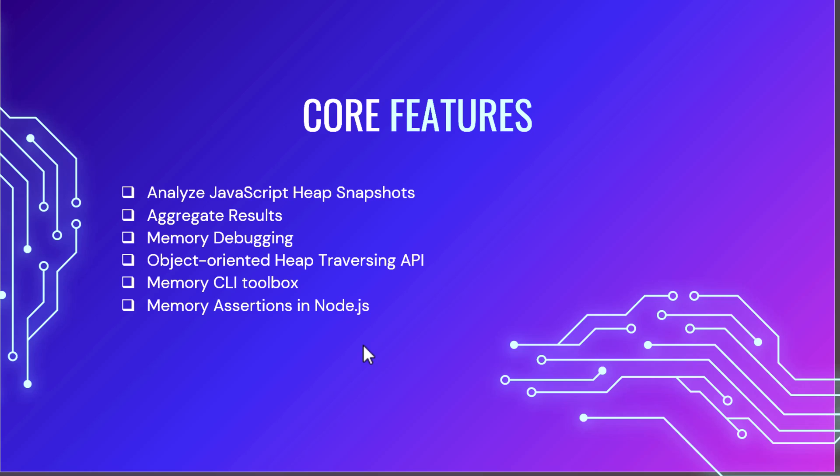Memlab will help you to aggregate your results. You can also debug the memory objects. It has an API where you can easily traverse the objects so that you can find what is causing the memory leak in your application. It also comes with a powerful CLI tool where you can send commands and it will automatically do the work for you. You can also integrate the Memlab API in your code using memory assertions in Node.js.